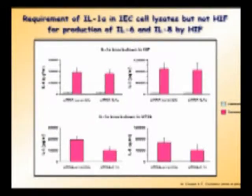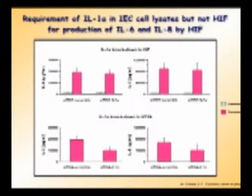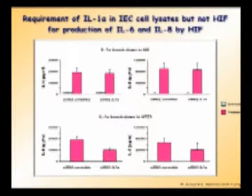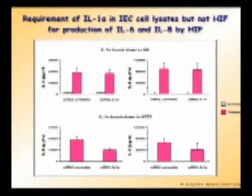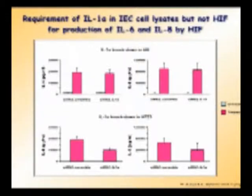We then asked whether the IL-1α causing the response came exogenously from necrotic cells, or whether IL-1α in the fibroblasts themselves was part of the response. When we did RNA silencing of IL-1α in the target cells there was no effect, but when we blocked IL-1α in the epithelial cells before generating the necrotic cell supernatant, we blocked the response by about 50%, again confirming that IL-1α from the necrotic epithelial cells was the key factor.